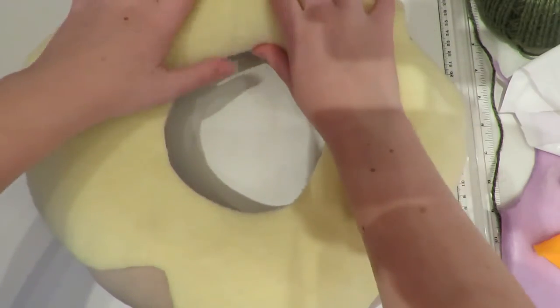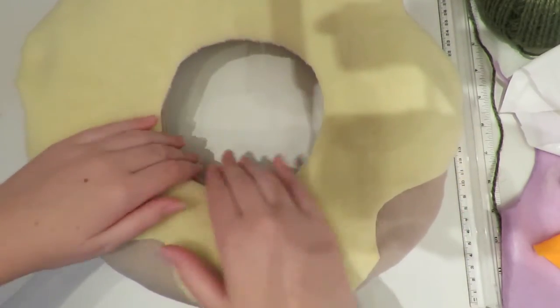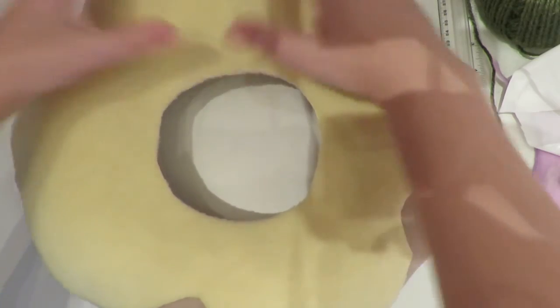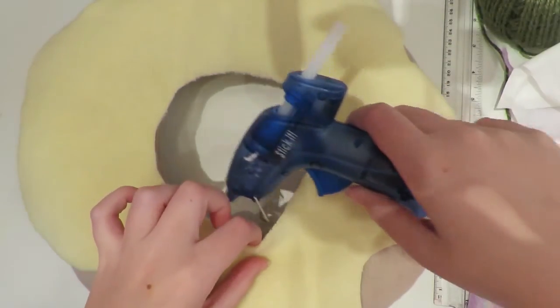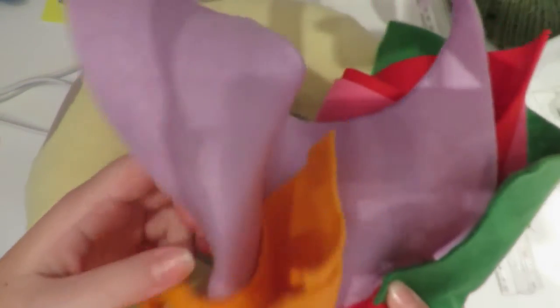Then what you're going to do is take your glue gun. I didn't sew this—I glued it because it's so much easier. Just glue all the way around the edges like so. We're just going to glue around and then glue in the center.